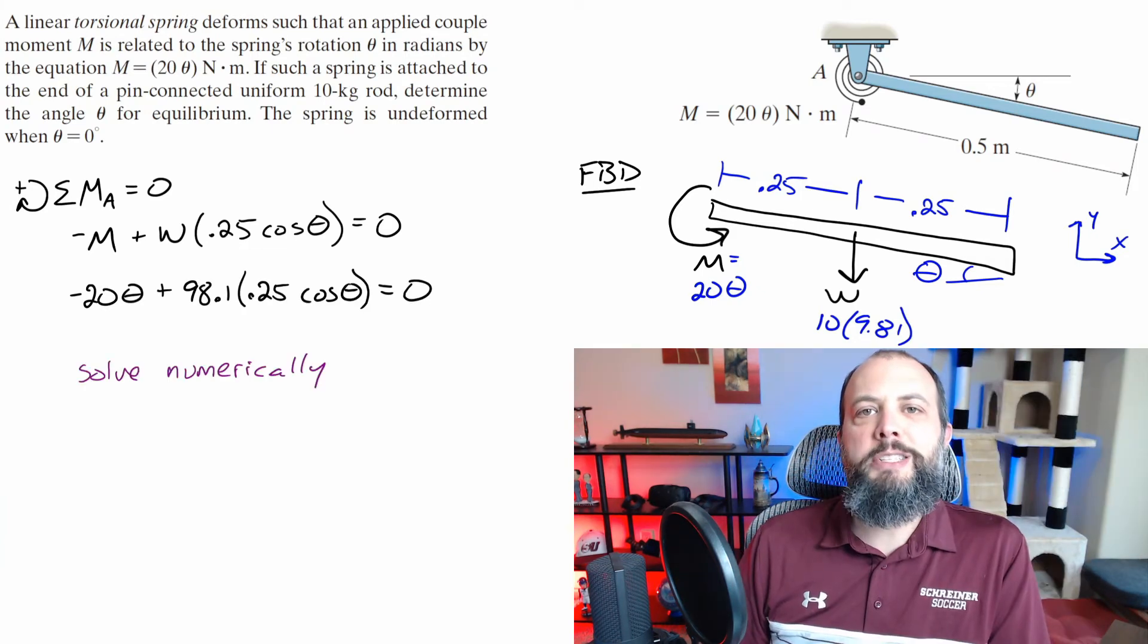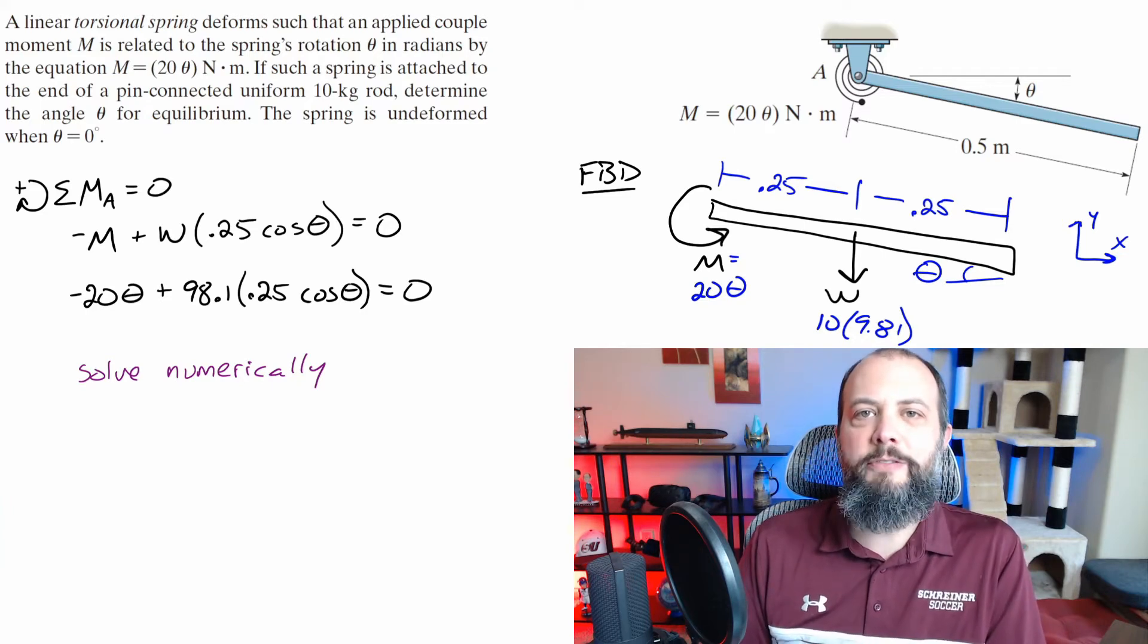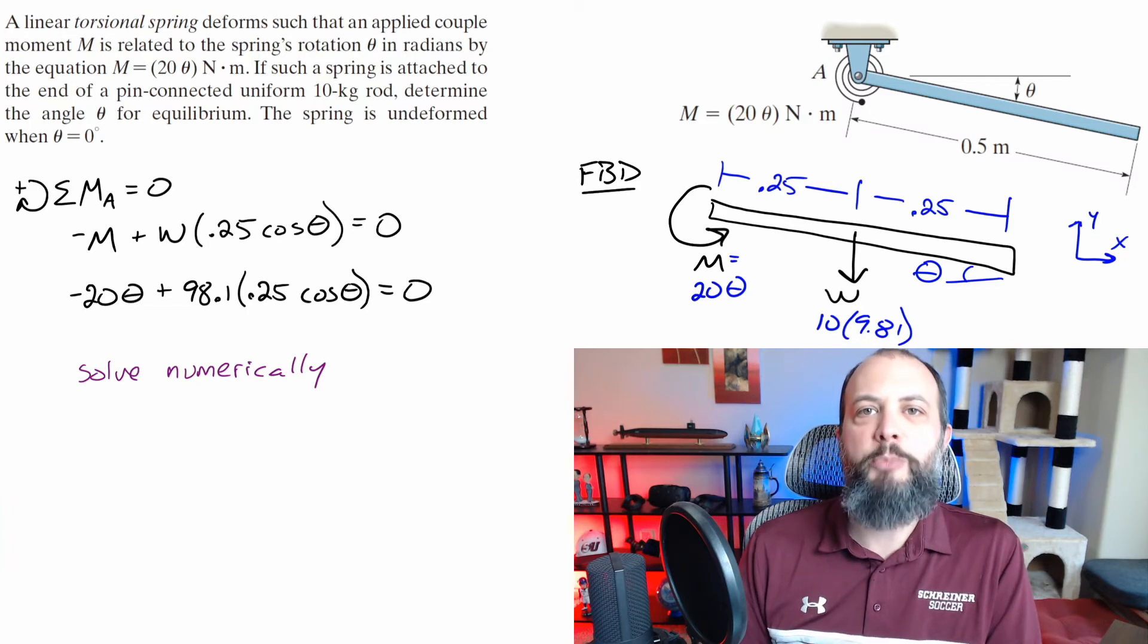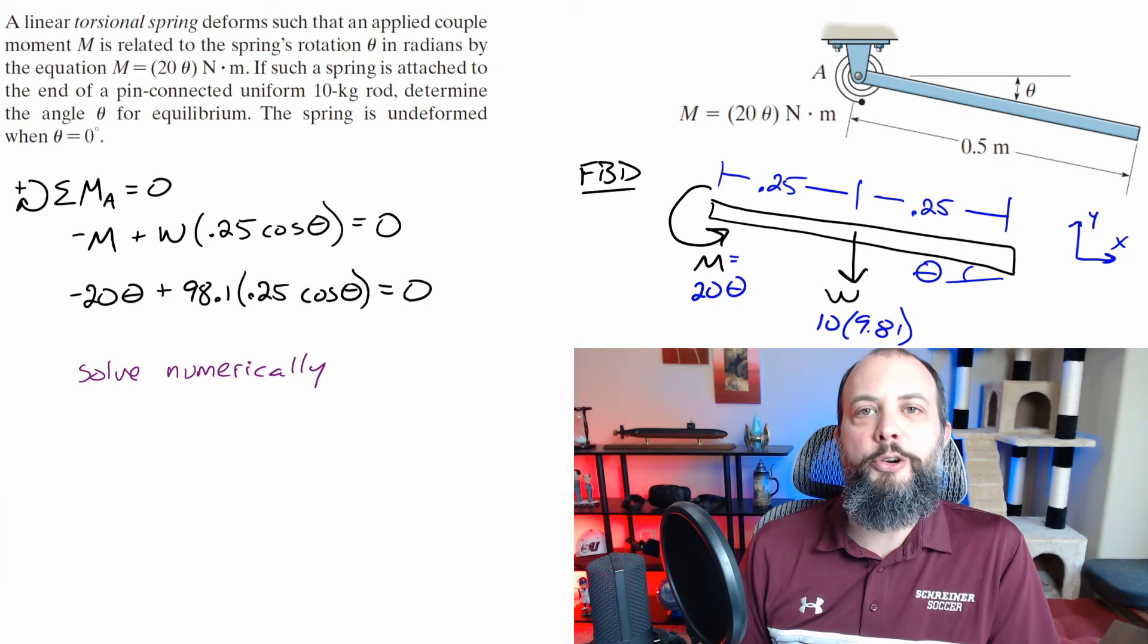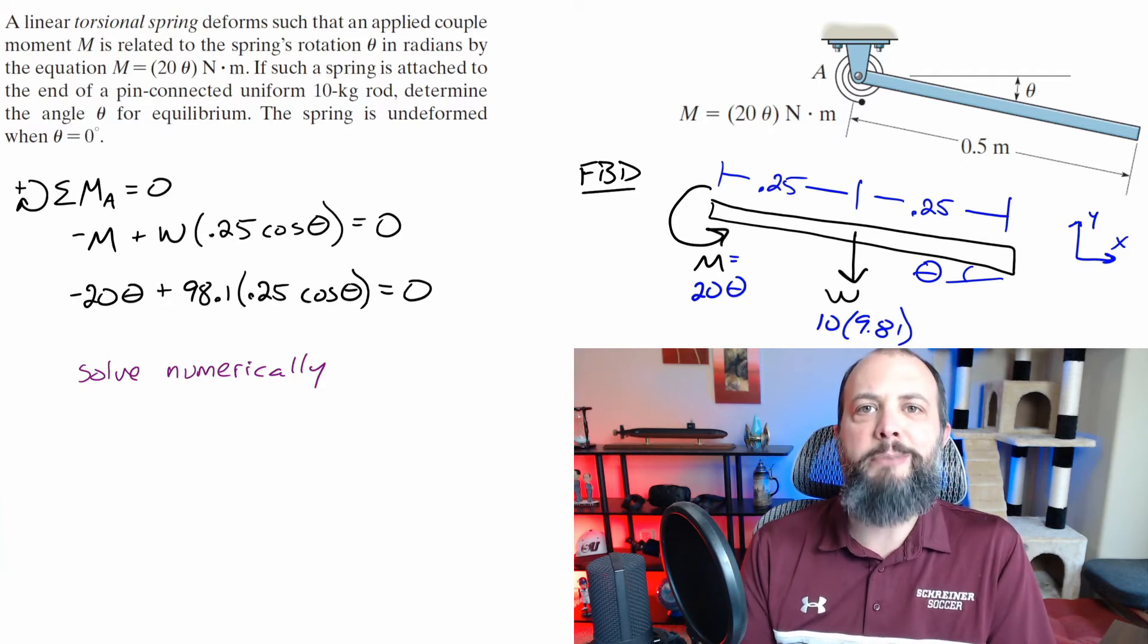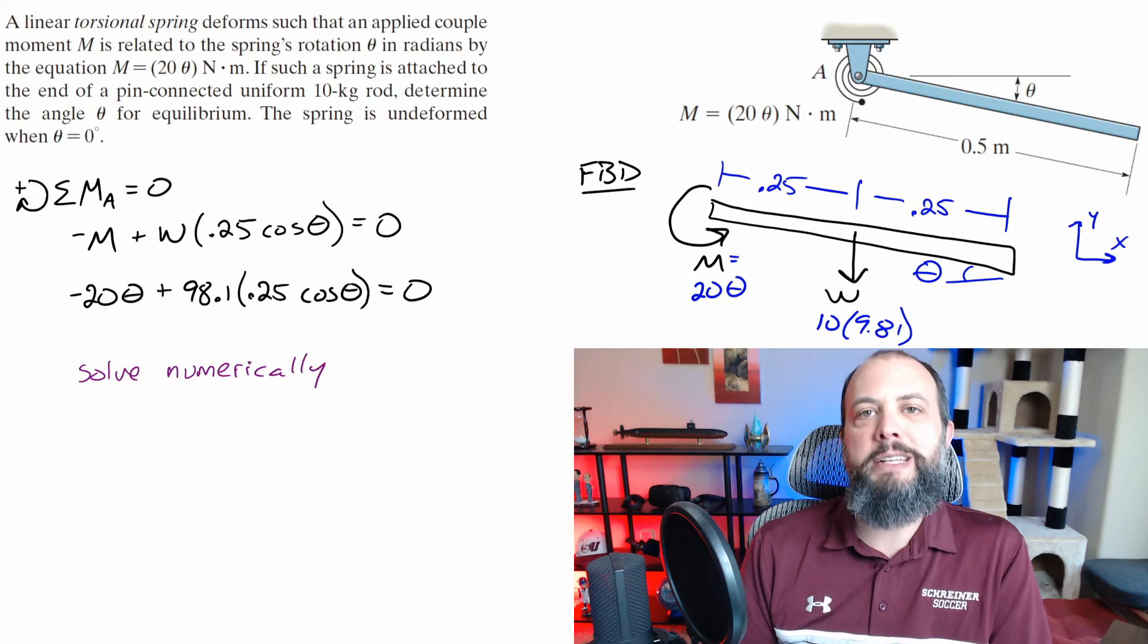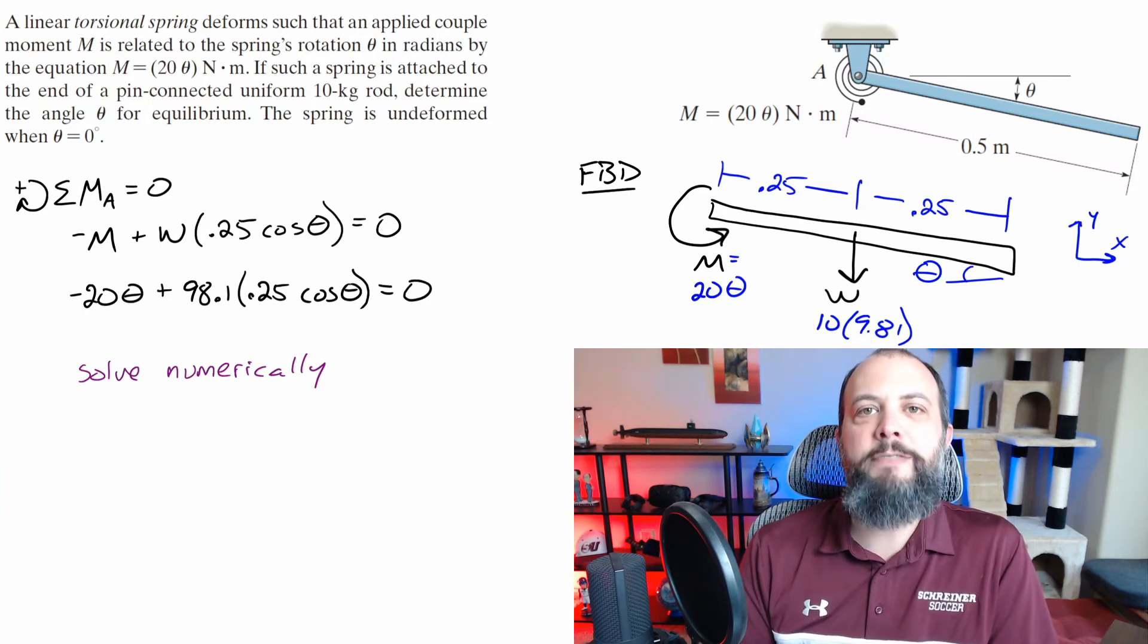It's impossible to solve a problem like cosine theta equals theta using algebra. These have to be solved graphically, numerically. There are a lot of different methods, but regular algebra won't work. And so the most common mistake I see on questions like this is that students try to carry forward through the algebra and then make algebra mistakes that allow them to get to an answer.